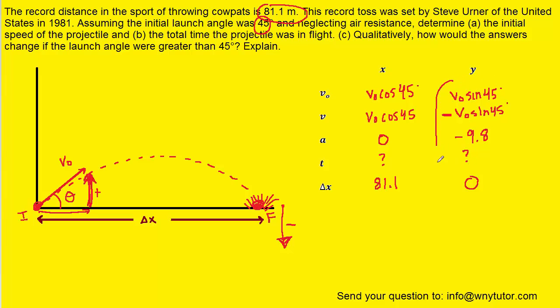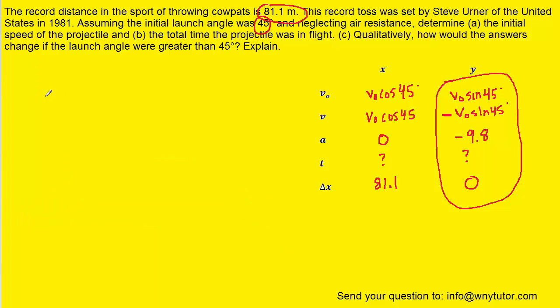We don't know the time, but we'll derive an expression for it using information in the y direction. From this chapter we have the equation Vf = V0 + at. Let's plug in the known information from the y direction. The final velocity is negative V0 sin 45, initial velocity is positive V0 sin 45, and acceleration is negative 9.8.